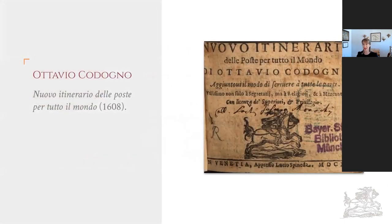Here is, in many ways, the book that started it all. This is Ottavio Codogno's New Itinerary of Posts Throughout the World, published in 1608 in Milan. The author, Ottavio Codogno, was the postal lieutenant for the Spanish Post Office of Milan, which itself was one of the most important hubs of this network. He worked with the Tassus postmasters — the Tassus being the family on whom I focused the dissertation — who really had a postal monopoly across much of Europe for the better part of 300 years, going on to become Thurn und Taxis.